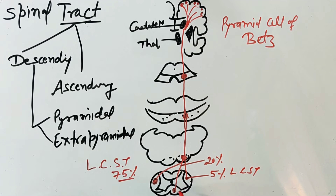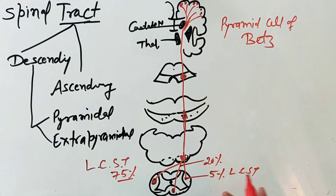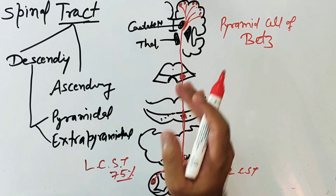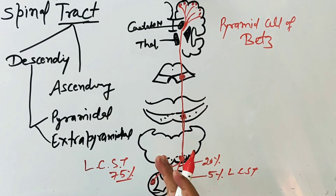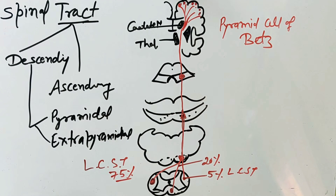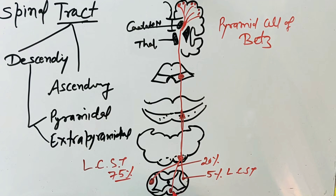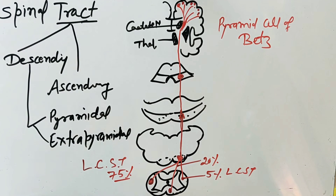These ipsilateral fibers, at different levels of the spinal cord before termination, cross and go to the opposite side. Ultimately, all fibers of the corticospinal tract cross the midline and go to the opposite side. The 75% cross at the pyramidal decussation, and the remaining 20% and 5% cross at different levels of the spinal cord before termination.